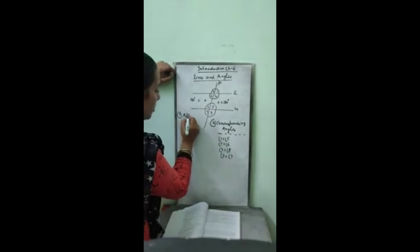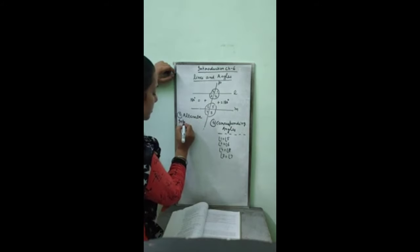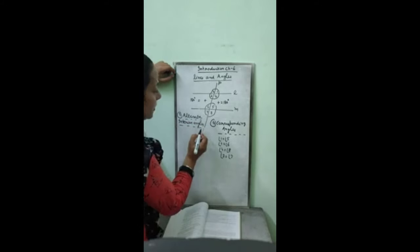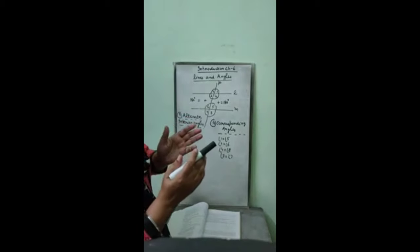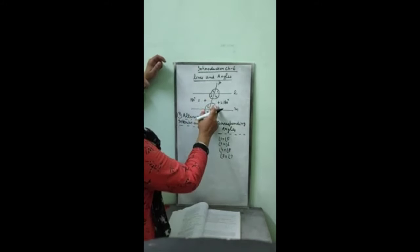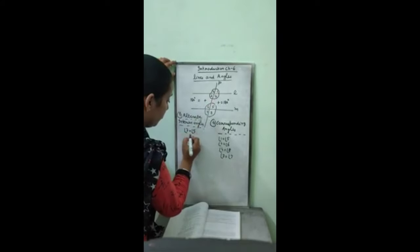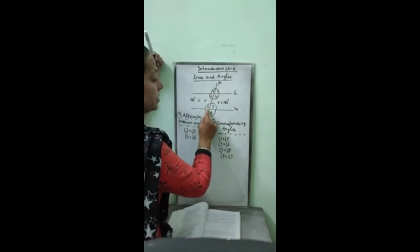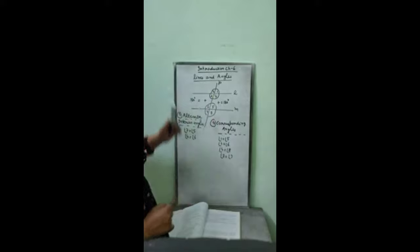Fifth relation: alternate interior angles. Alternate means on the interior side. 3 and 5, 4 and 6. 3 and 5, 4 and 6 are alternative angles. Students, alternative angles can be identified by Z also. These angles always make Z with each other. See, 3 and 5, this is Z. 4 and 6 is also Z, either in reverse or in direct way. It will be Z. Alternate interior angles.